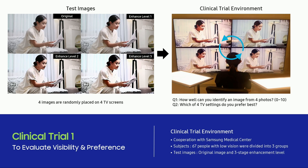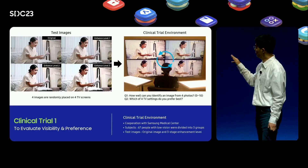The three groups were: severe, moderate, and mild. Each subject performed the test in a space similar to a general home viewing environment. All subjects evaluated visibility and preference while watching four images processed by Rilumino. The four images represent the original image and soft, moderate, and strong adjusted images, randomly placed on four TV screens.